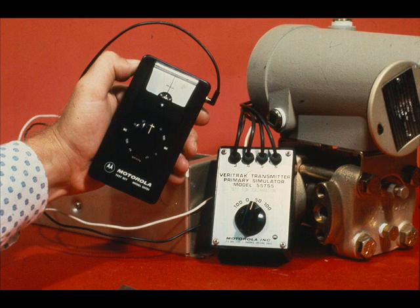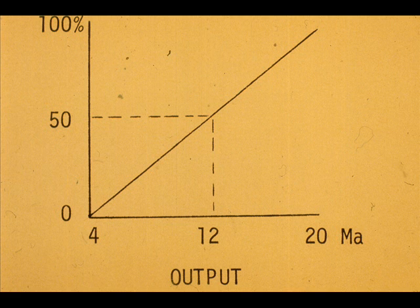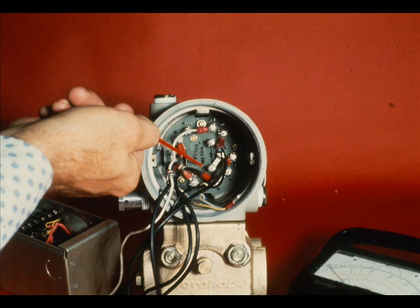The 50% setting provides an approximate 50% input check. The amplifier output should read approximately 50% of span. The 50% selection also gives a quick check on the approximate linearity of the transmitter. If desired, a milliamp meter can be connected across terminals 10 and 11 for reading the transmitter output.